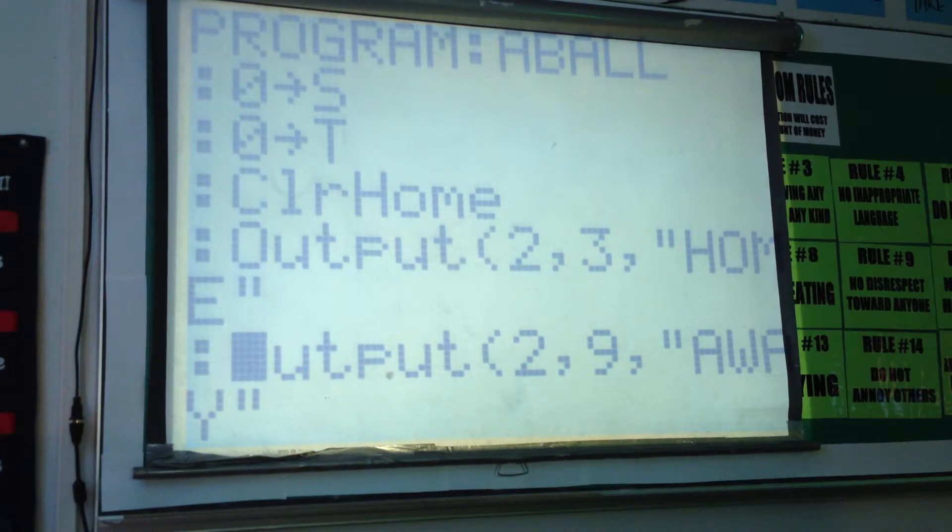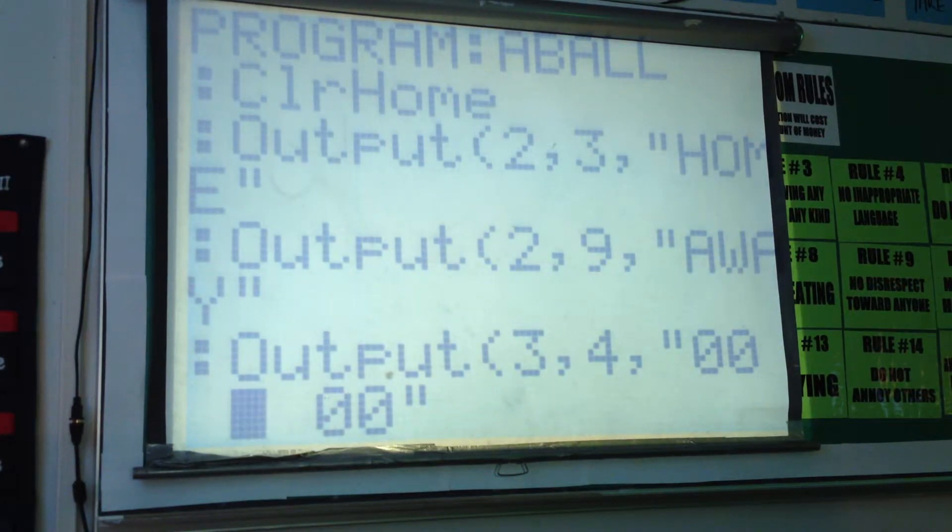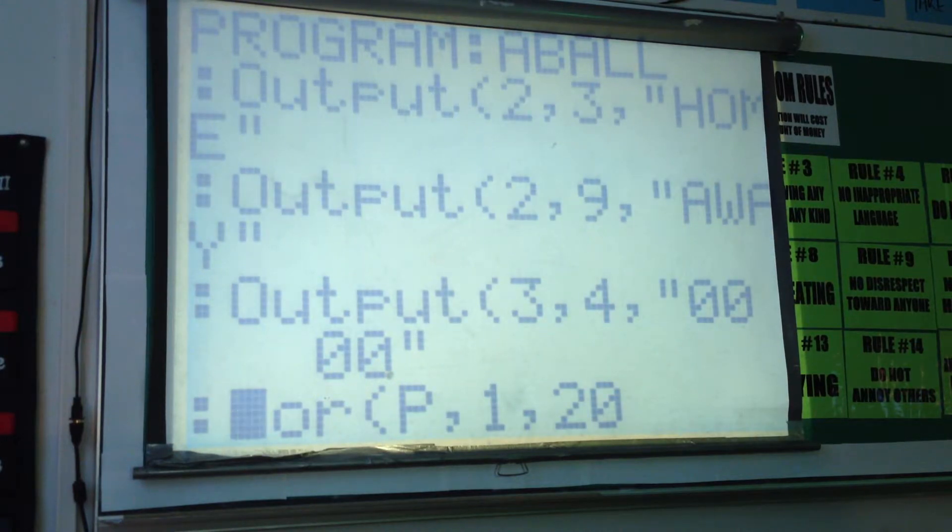So we clear home and output the home and away, which is essentially the scoreboard. And then we put double zeros under each one to start with.